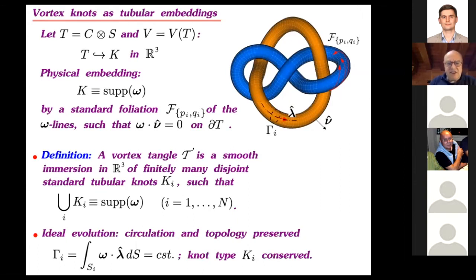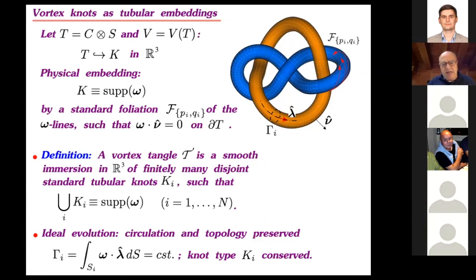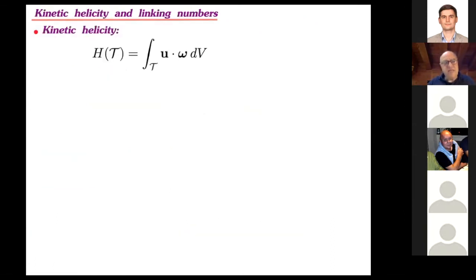The vortex tangle is just the union of these knots and links made by vorticity. In ideal conditions, the strength of the tube — i.e., circulation — is conserved, as is topology. We care about changes of topology due to reconnection and viscous effects, but I won't consider viscous dissipation in this talk. It is also important to remember a quantity with topological significance in fluid mechanics: helicity. Helicity for a tangle is the integral of u dot omega over the volume of vorticity.